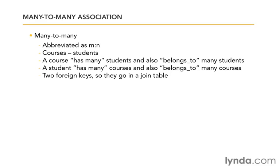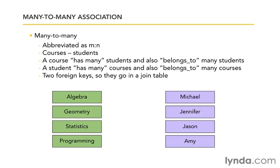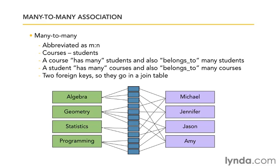Let me explain why. Imagine we have four courses and four students, and we want to keep track of which students are in which courses. Let's say Michael is taking algebra, geometry, and statistics. We could put the foreign key in each course — algebra has Michael's ID, geometry has Michael's ID, statistics has Michael's ID. But then what about when Jennifer is also supposed to be in the class? Do we replace Michael's ID with hers? Do we create another column? What if there are 100 students — do we have 100 columns just for keeping track of foreign keys? No. A much better solution is to create a join table. The join table will just contain two pieces of data: the two foreign keys — the foreign key for the course algebra and the foreign key for the student Michael — making the relationship between the two of them.